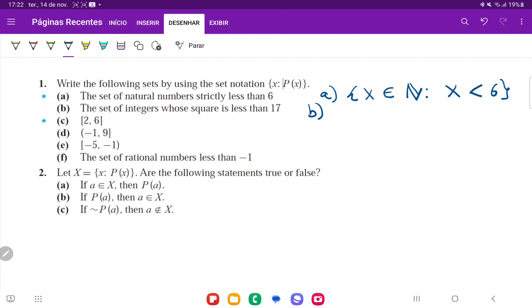For item b we want to take it from the set of integers. So we're going to produce an x belonging to the set of integers such that x squared is less than 17.